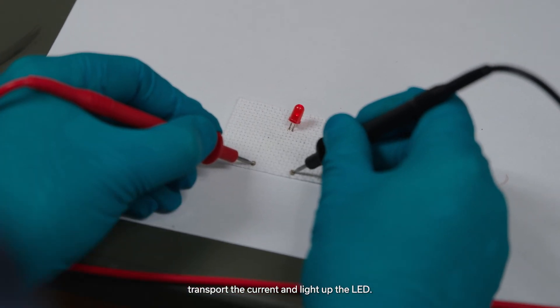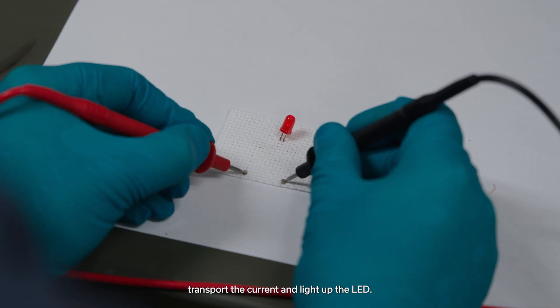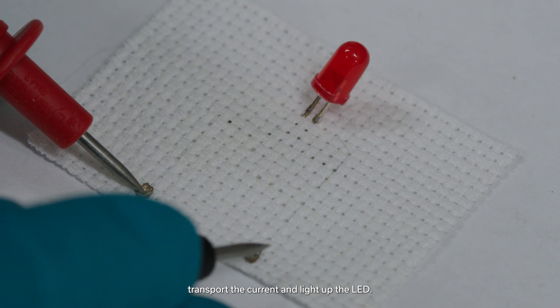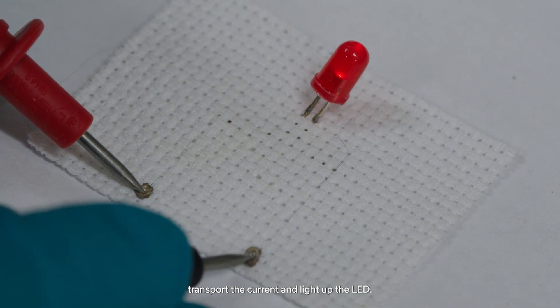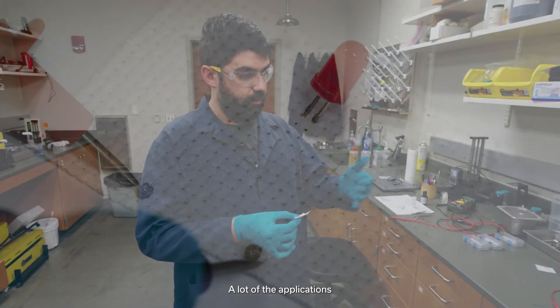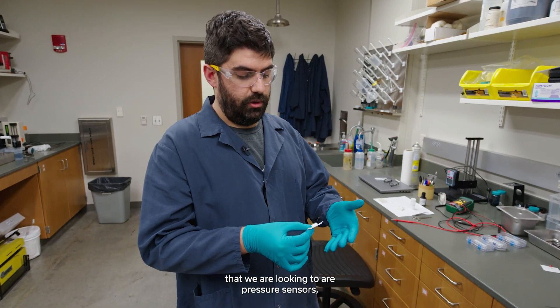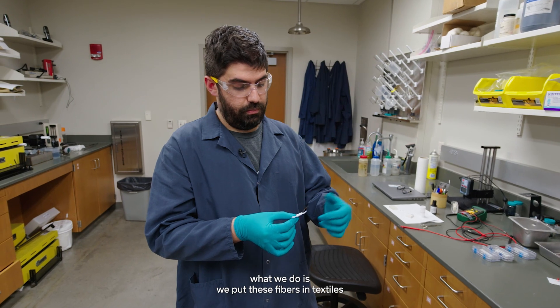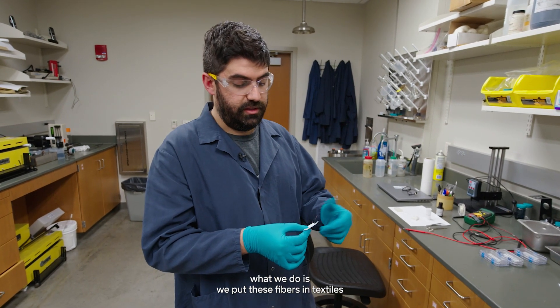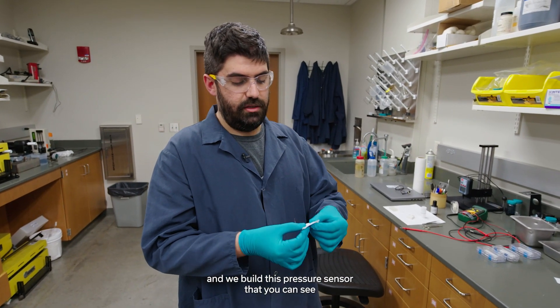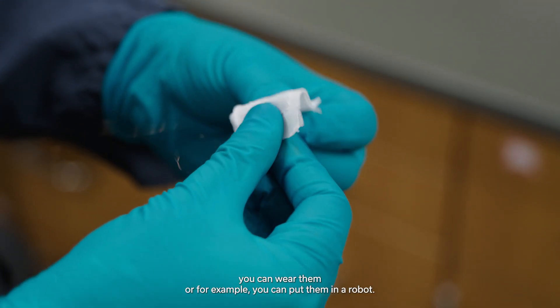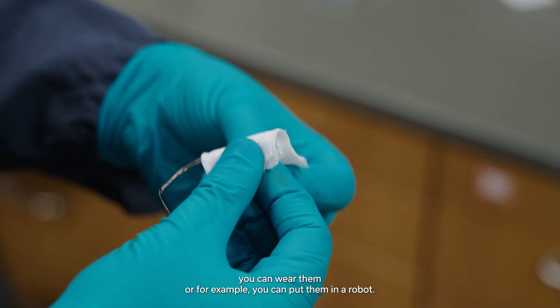Another of the applications that we are looking at is pressure sensors. What we do is we put these fibers in textiles and we build these pressure sensors. You can see they are completely flexible, they are textile, you could wear them or for example you could put them in robots.